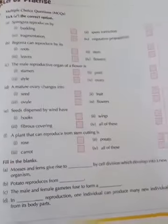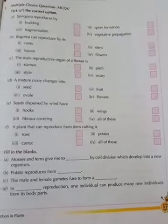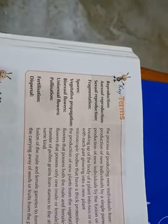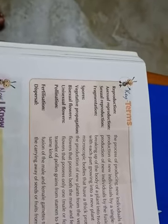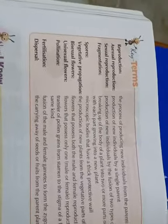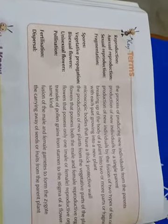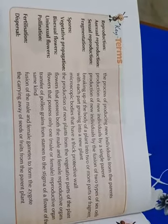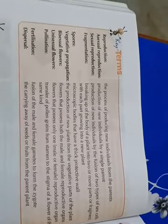And also this page will be your homework, from page number 137. You should learn these things - what is reproduction, asexual reproduction, sexual reproduction, fragmentation, spores, vegetative propagation, bisexual flowers, unisexual flowers, pollination, fertilization, and dispersal. You should learn it and submit it to our WhatsApp group. Thank you my dear students, thank you for watching.